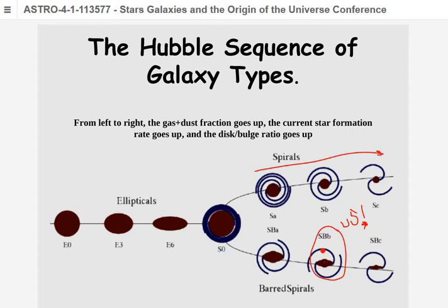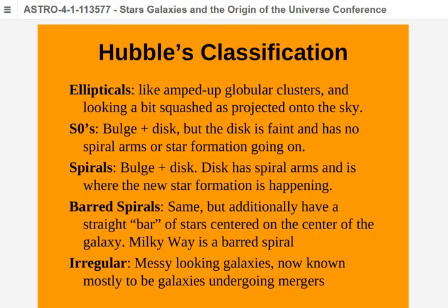We didn't know we had a bar in the middle because we live out near the edge, on the inside edge of a spiral arm. Irregular galaxies are messy-looking galaxies without a particular shape — kind of an 'other' category for galaxies that look all messed up, in contrast to the clearly shaped, precisely symmetric type galaxies.